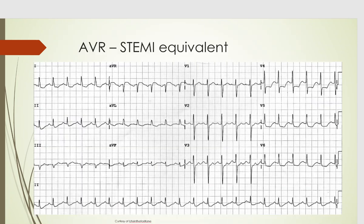Here's another EKG I found on the internet. This one has definitely greater than two millimeters — looks like about three millimeters of ST elevation in AVR. Then you look at V4, V5, V6: all have ST depression, as well as lead one and lead two. This fits the criteria for an AVR STEMI equivalent. I don't have clinical information on this patient, but you want to clinically correlate — though this one is pretty obvious.